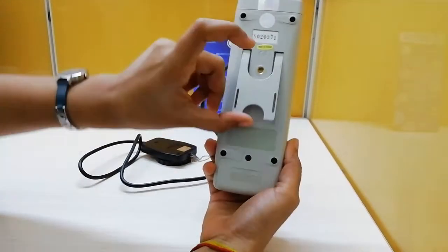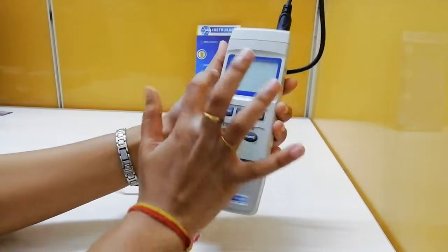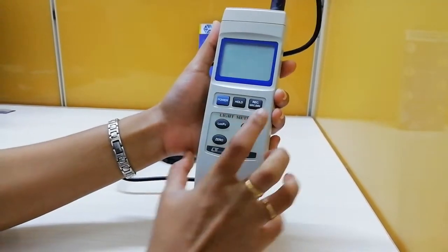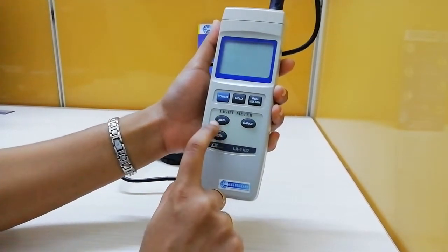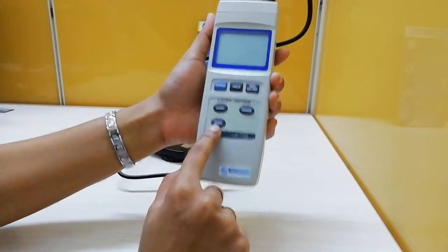Here you can see the stand, battery compartment, the large LCD display, power key, hold key, record key which indicates maximum and minimum values, unit key for lux and foot candle, the range selector, and the zero adjustment key.